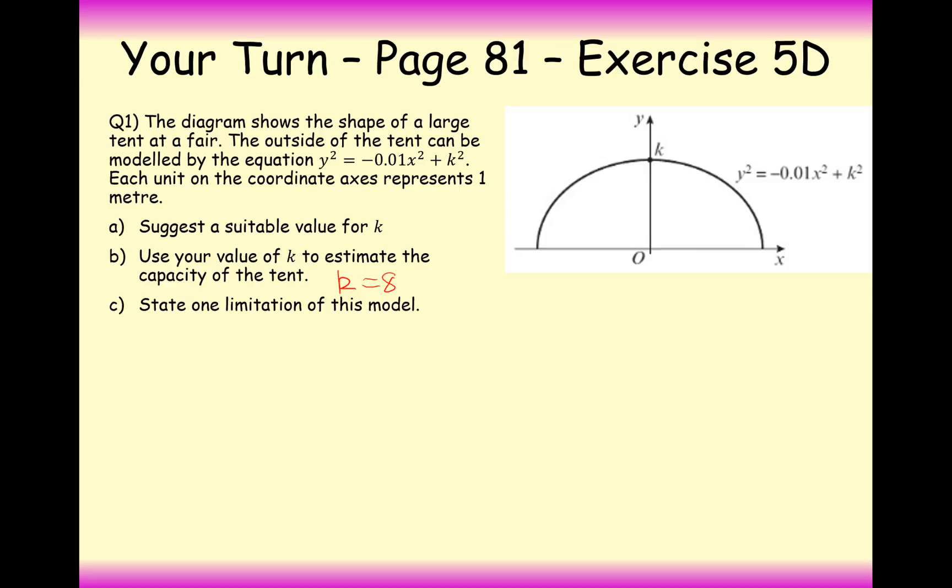Alright then, so your value of k should approximately be the height that a tent at a fair is going to be. So I've chosen 8 meters. The units for this question here are in meters. So that's absolutely fine. Maybe you've gone to 10 meters. Maybe you've chosen exceptionally large tents. Maybe you've gone to 15 meters. Or maybe a smaller tent. Maybe just for a coconut shy. So maybe it's just 3 meters or 4 meters. Either way, it's going to approximately be the height of a tent at a fair.